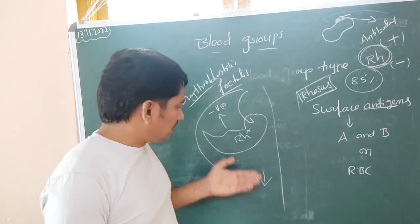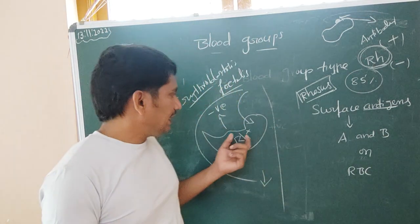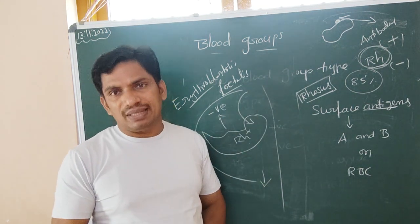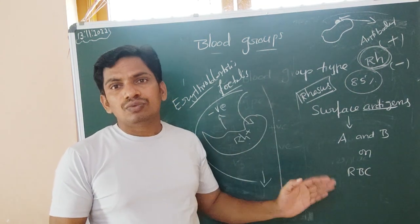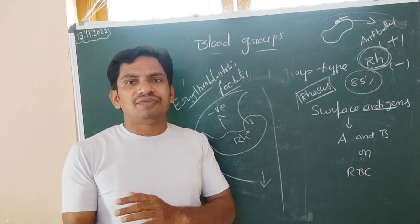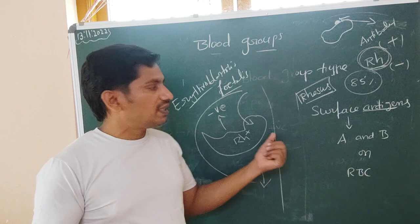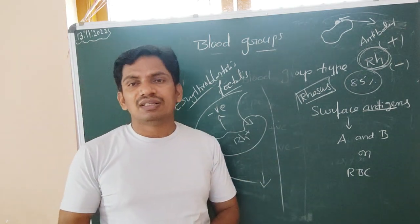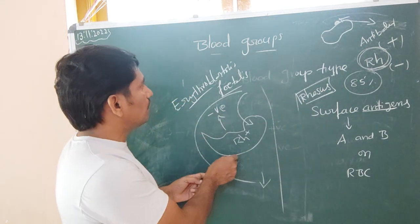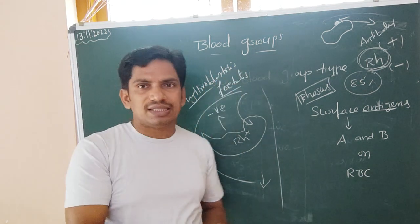In such cases, the doctor will notice and give anti-RH antibodies to the mother soon after the first delivery. The first delivery is safe; the second pregnancy is the difficult one. To prevent that, they give an injection after the first delivery. This is the erythroblastosis fetalis case.